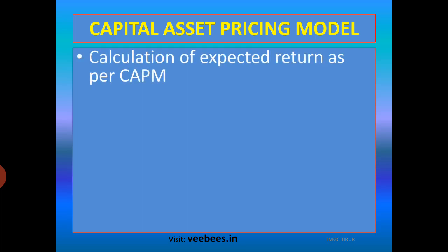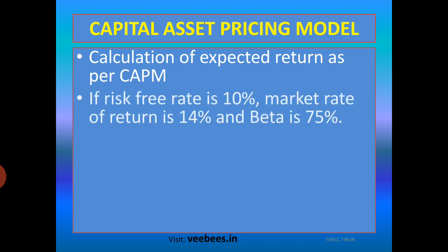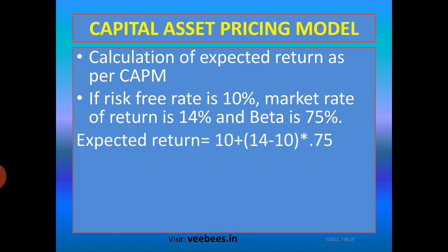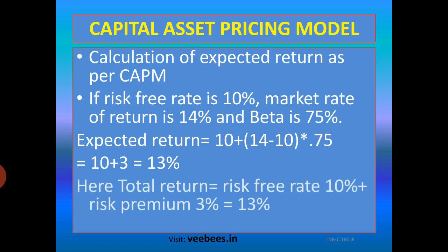Let's see how to calculate expected return as per CAPM. If risk-free rate is 10%, market rate of return is 14%, and beta coefficient is 0.75, then expected return is calculated as: RF = 10, plus RM minus RF = 14 minus 10 = 4, multiplied by beta = 0.75. So it is equal to 10 plus 4 × 0.75 = 10 plus 3 = 13%.